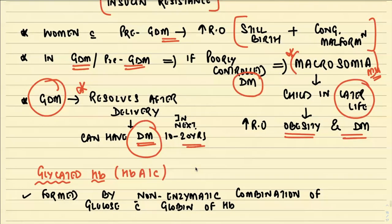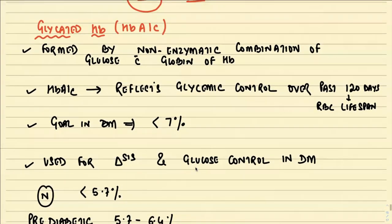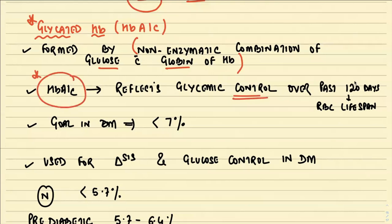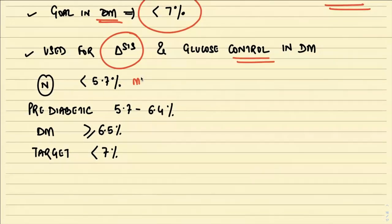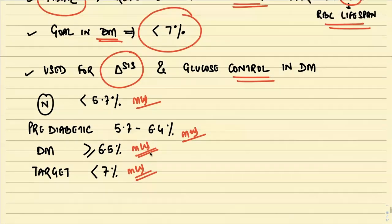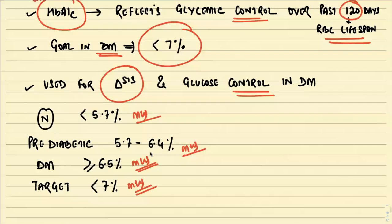The last topic is glycated hemoglobin, also called HbA1c, formed by non-enzymatic combination of glucose with the globin of hemoglobin. HbA1c levels reflect glycemic control over the past 120 days, corresponding to the lifespan of RBCs. The target HbA1c in diagnosed diabetic patients should be less than 7%. Normal levels are less than 5.7%; pre-diabetic range is 5.7 to 6.4%; diabetic is greater than or equal to 6.5%. HbA1c is used both for diagnosis and for monitoring glucose control in diabetic patients.